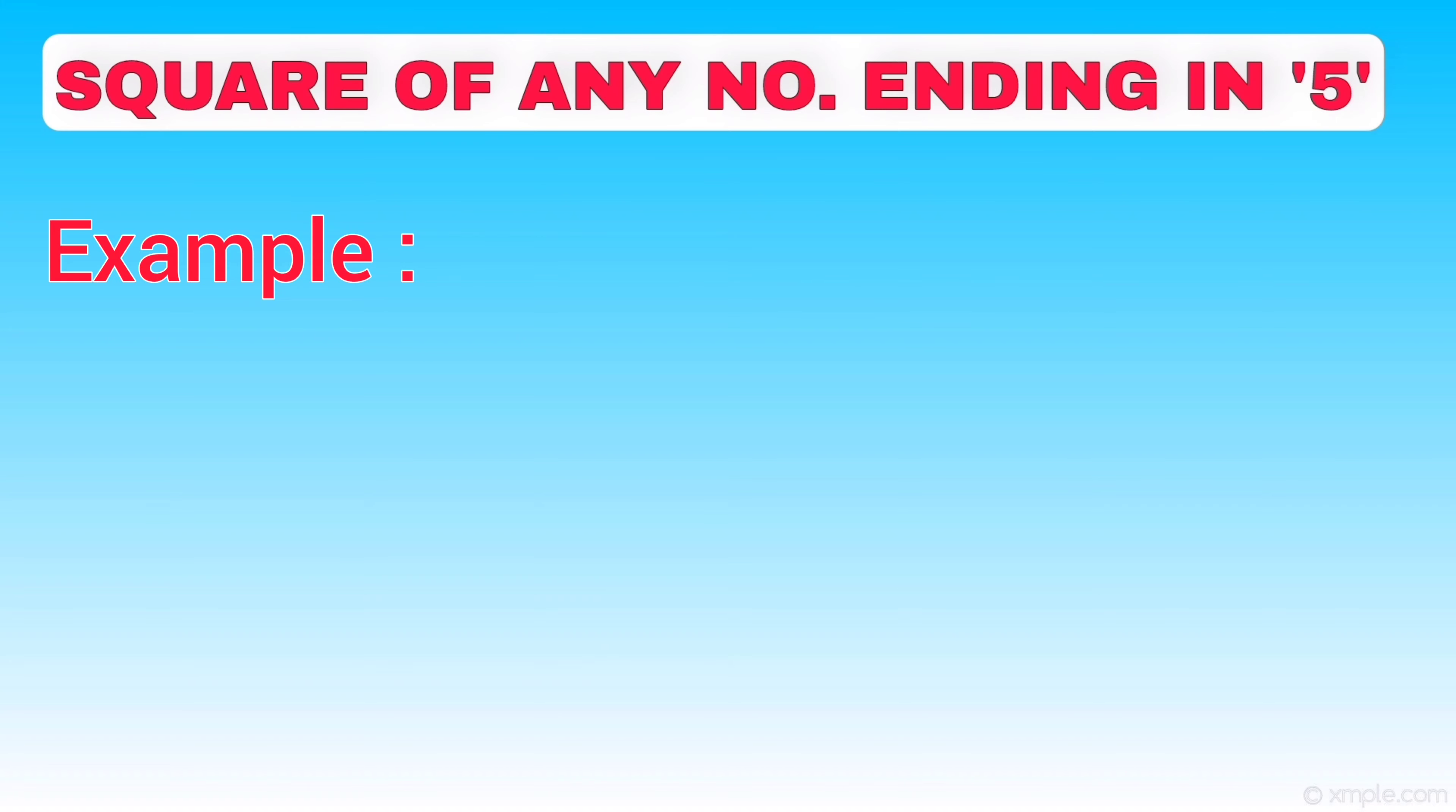Let us take an example to understand the trick. Example is 35 square. In order to understand the trick, we divide the solution into two parts: the left part and the right part.